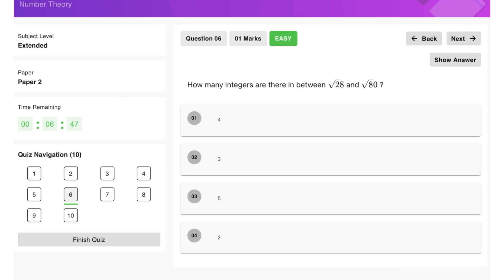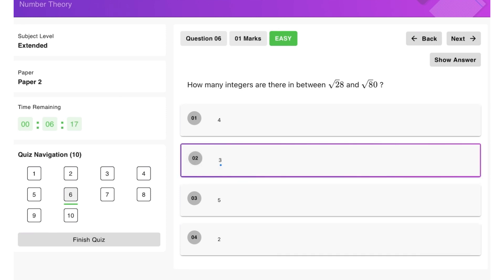Moving on, we're looking at how many integers are there in between square root of 28 and square root of 80. So think about the closest perfect square. So square root of 36 is 6. And the closest square root coming from the other end is square root of 64, which is 8. So if we think about it, we have 6, we will have 7 in between and we'll have 8. So therefore, we have 3 integers in between this range given to us here.